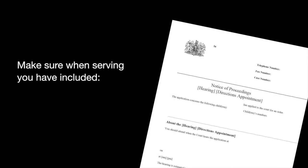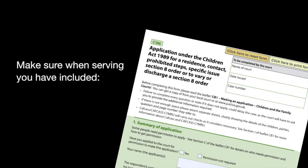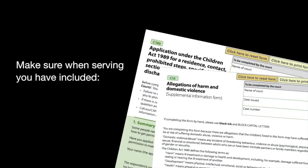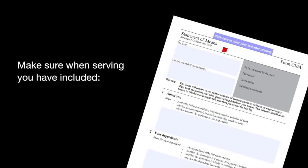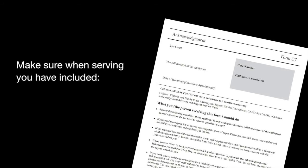Make sure when serving you have included their copy of the Notice of Proceedings form C6, a copy of C100 and C1A if applicable, a copy of any other papers which the court office has allowed you to file at the court — for instance, a copy of a court order, a blank statement of means if you have filled in form C10A, and an acknowledgement form C7 if the court office has provided this form.